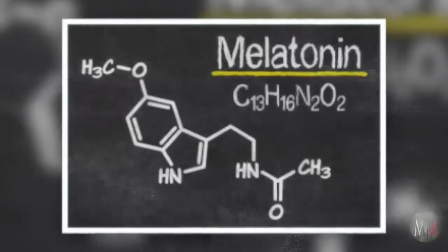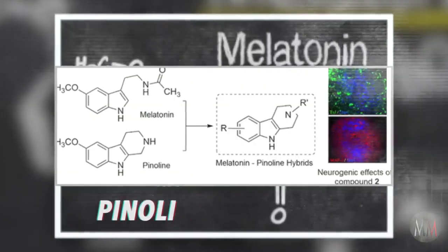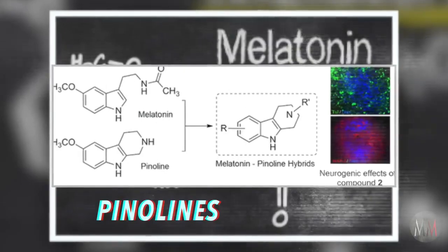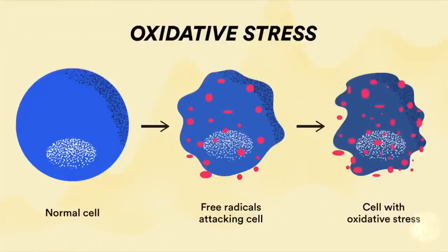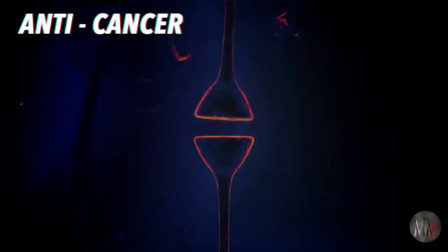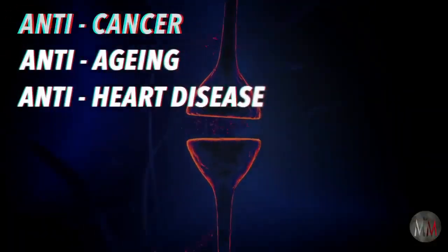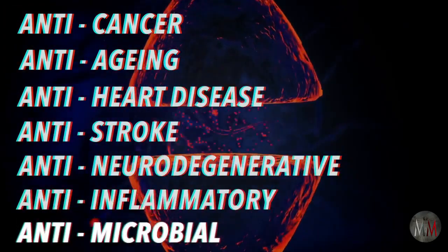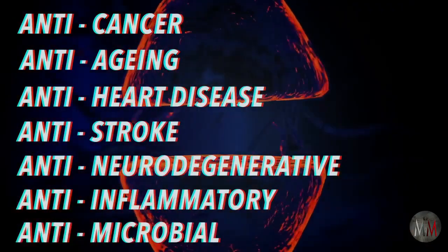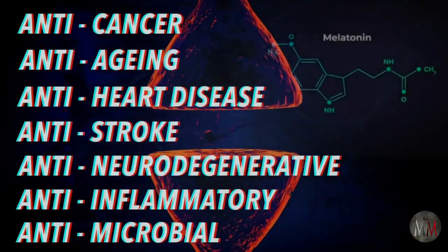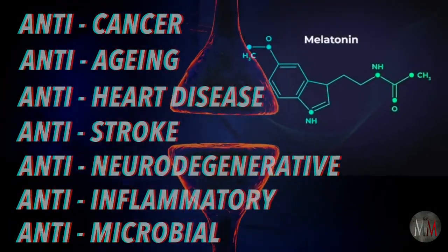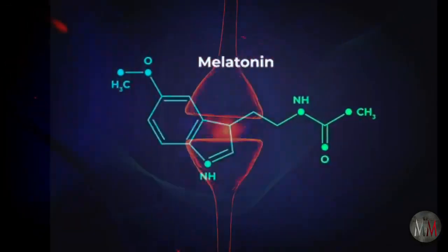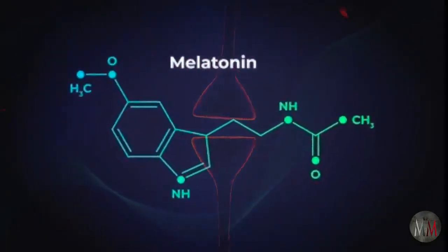Another chemical created from melatonin produces a class of very powerful antioxidants called pinoline. Pinolines are important because they attack free radicals which harm your cells and cause aging. These antioxidants are anti-cancer, anti-aging, anti-heart disease, anti-stroke, anti-neurodegenerative, anti-inflammatory, and antimicrobial. That's a perfect formula to upgrade melatonin's normal role as an antioxidant to the role of a supercharged antioxidant that further restores and heals the body.